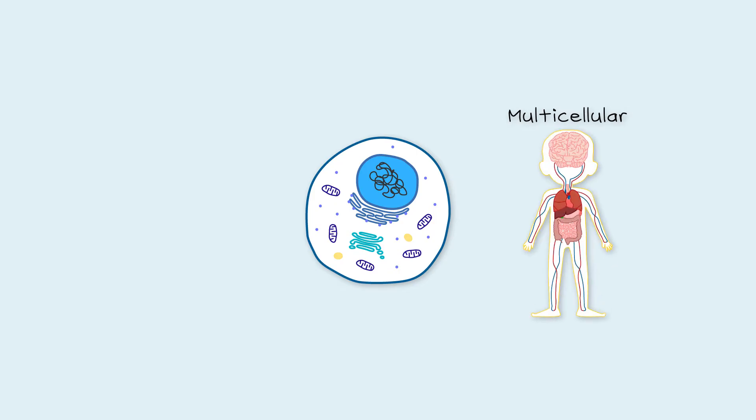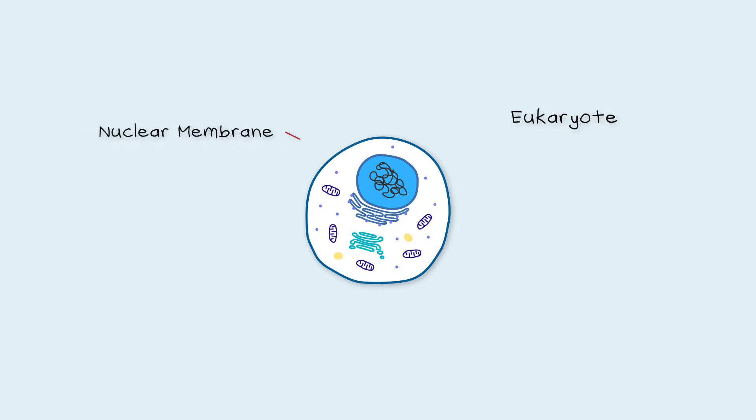Finally, we have an animal cell. Animals are multicellular organisms, so there are trillions of these in our bodies. Animal cells are eukaryotes, so there's a nuclear membrane to hold the DNA. There's no vacuole and no cell wall.